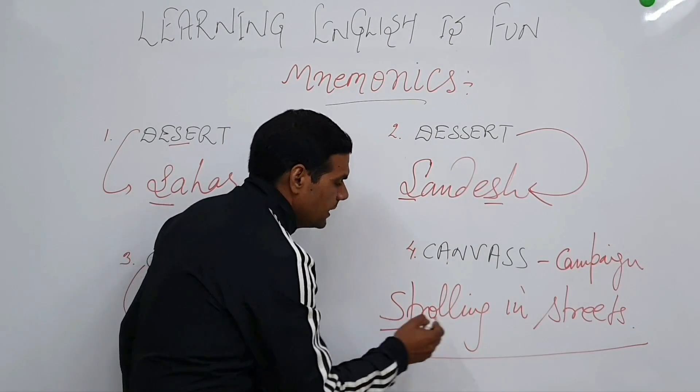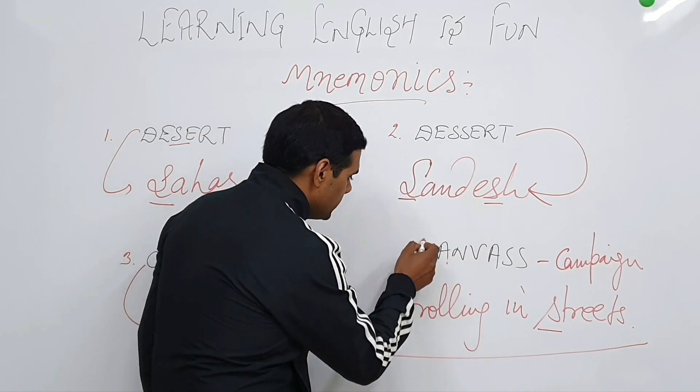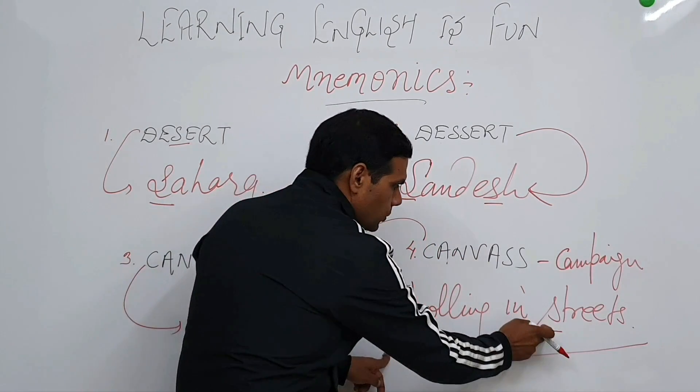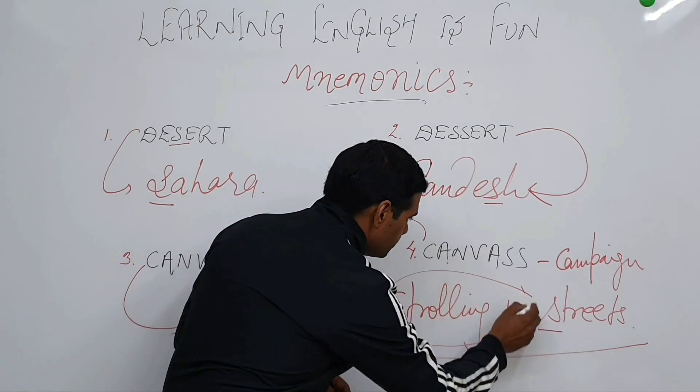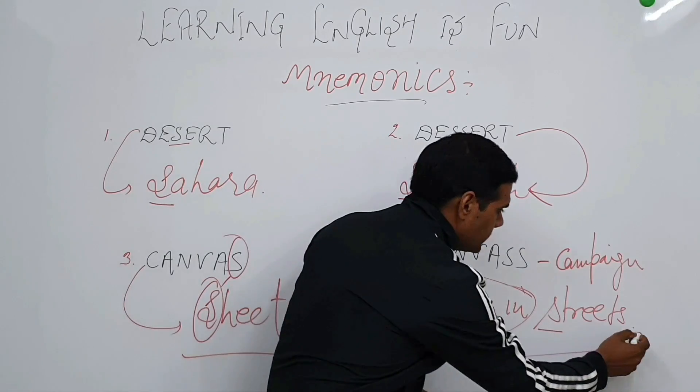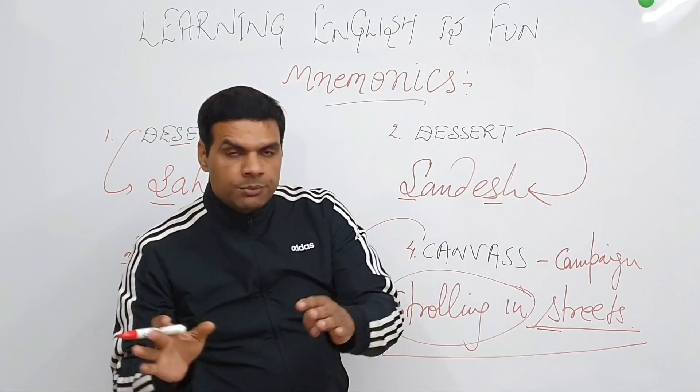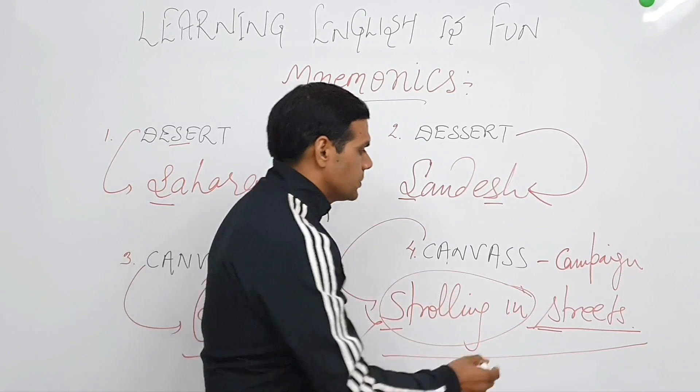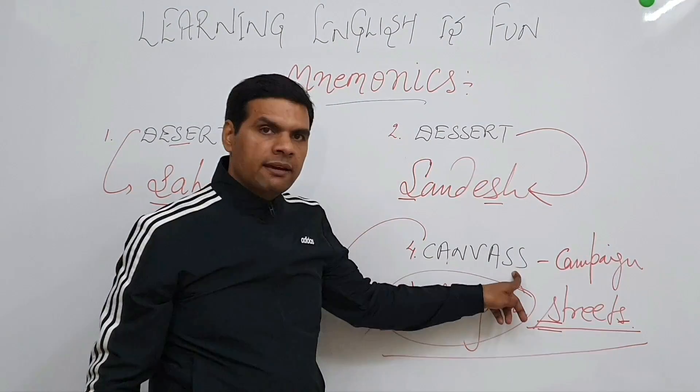So here we have one 's' and then here we have the other 's'. So once you associate this word with this meaning, you will know there will be two 's's. But even if you just want to have one word, you can drop this and you can just have the word streets, because people will be moving about not in one street but many streets. So streets will have two 's' and again in canvass also you will have two 's's.